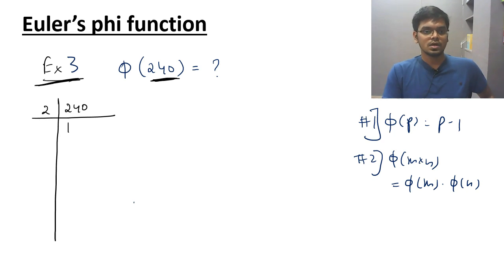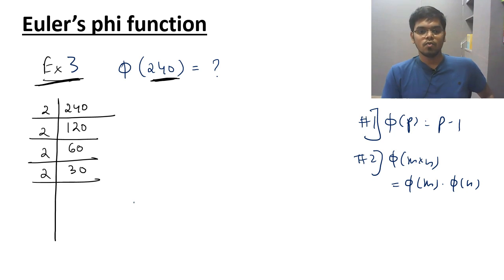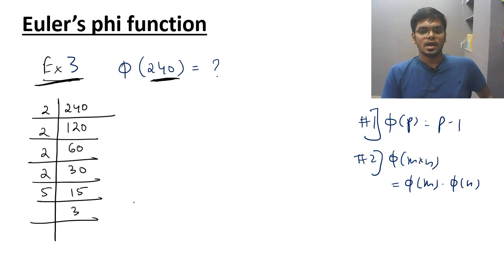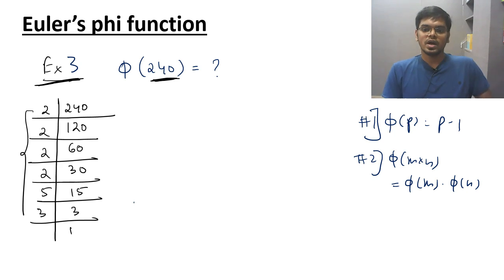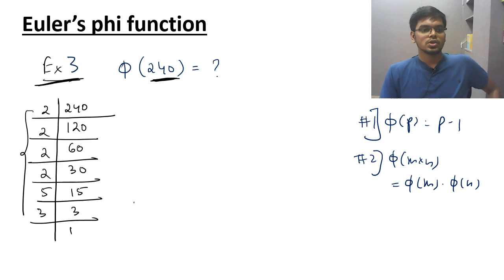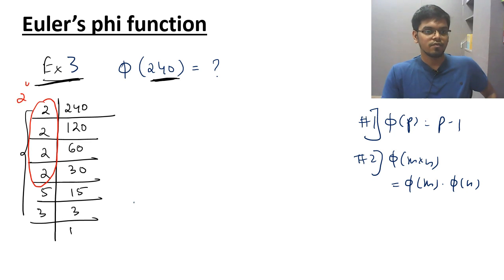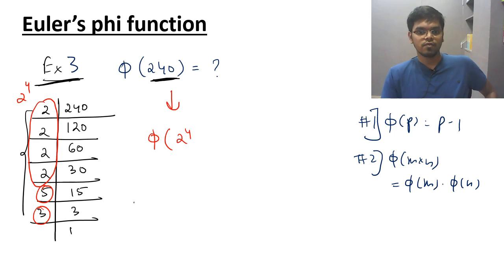Let us do the division of 240. Dividing by 2 repeatedly: 240 divided by 2 is 120, divided by 2 is 60, divided by 2 is 30, divided by 2 is 15. Now 2 is no longer a factor. 15 can be divided by 5: 15 divided by 5 is 3, and 3 divided by 3 is 1. So 240 equals 2 to the power 4, times 5 to the power 1, times 3 to the power 1.